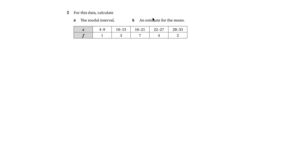Here we have a question with some data, asking us to calculate the modal interval and an estimate for the mean. For the modal interval, the mode is the group with the largest frequency. The frequency of 7 is the largest, so the modal interval is 16 to 21.